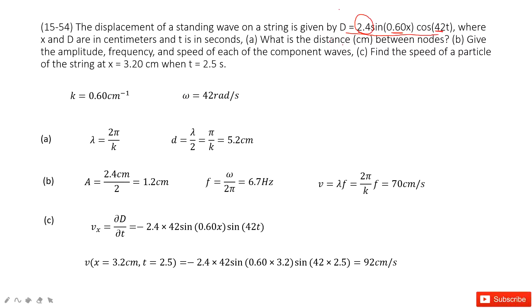First one, ask you to find the distance in centimeters between nodes. As we learned previously, this distance is just half of the wavelength. The wave moves this way, and this is called nodes, this is also called the nodes. The distance between the two nodes is just half of the wavelength. So we need to find the wavelength first.